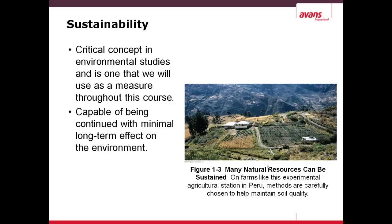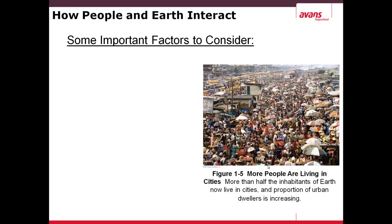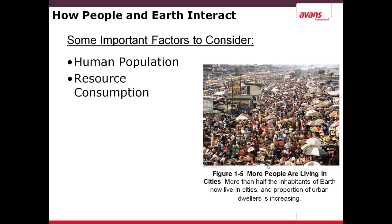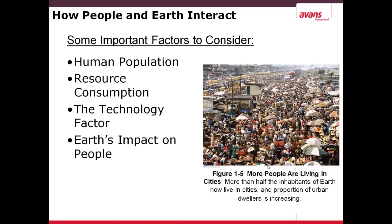On the right-hand side in this picture, you see an experimental agriculture station in Peru which is using very sustainable farming techniques. Some important factors to consider are the growth in human population — on the right you see a city in India, which represents the fact that more than half the inhabitants of the earth live in cities and this proportion is increasing. The amount of resource consumption that the human population in cities, but also in non-urban areas, have. The technology factor. And, of course, Earth's impact on people. We must not ignore the impact that the earth has on us, and not focus only on our impact on the earth.